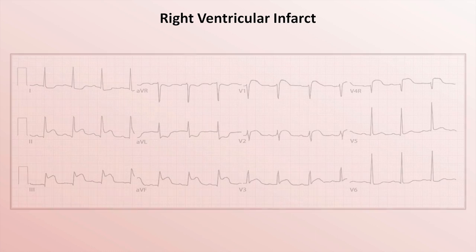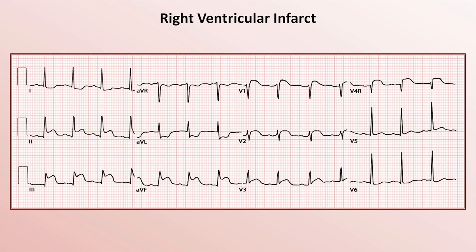This is what the EKG of an RV infarct looks like after doing that. You can see an obvious inferior STEMI. In addition, there is ST elevation present in V1 and V2, with the elevation in V1 being greater than that in V2 — that already strongly suggests an RV infarct. To confirm it, the clinician has included lead V4R, which shows up on the EKG in the same place usually reserved for V4. The presence of ST elevation in V4R confirms the RV infarct.